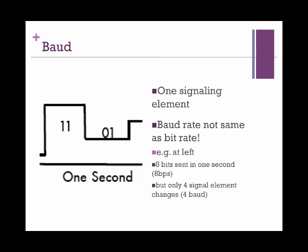Baud is the number of distinct symbol changes, or signaling events, made to the transmission medium per second in a digital signal. Many data terminal equipments convert data into eight-bit binary sequences, as shown in this picture. So per one second, eight bits of data are transferred. However, there are only four symbol changes within these eight bits — therefore this transmission is said to have four baud.